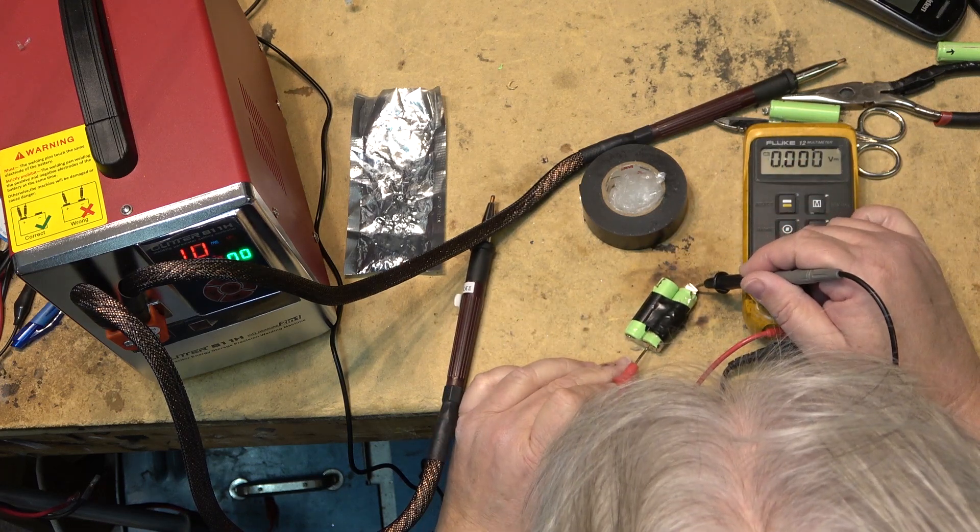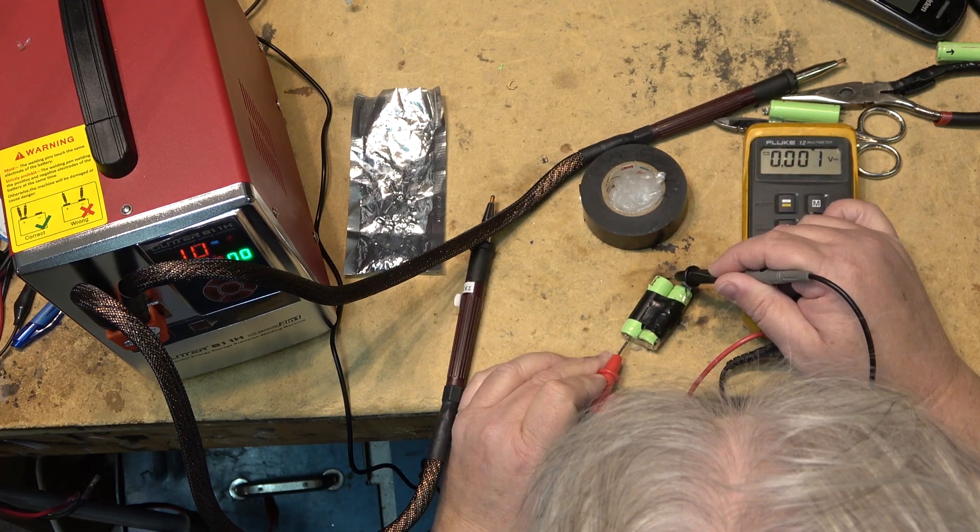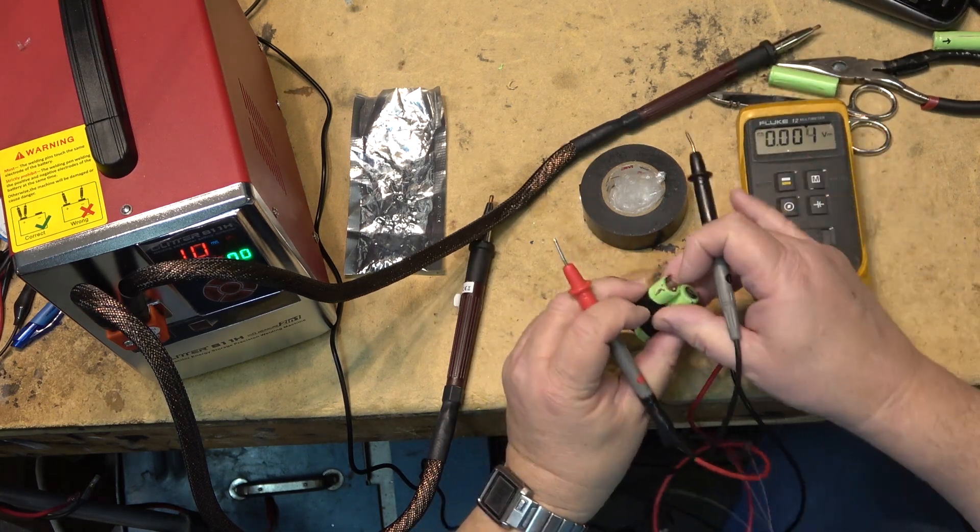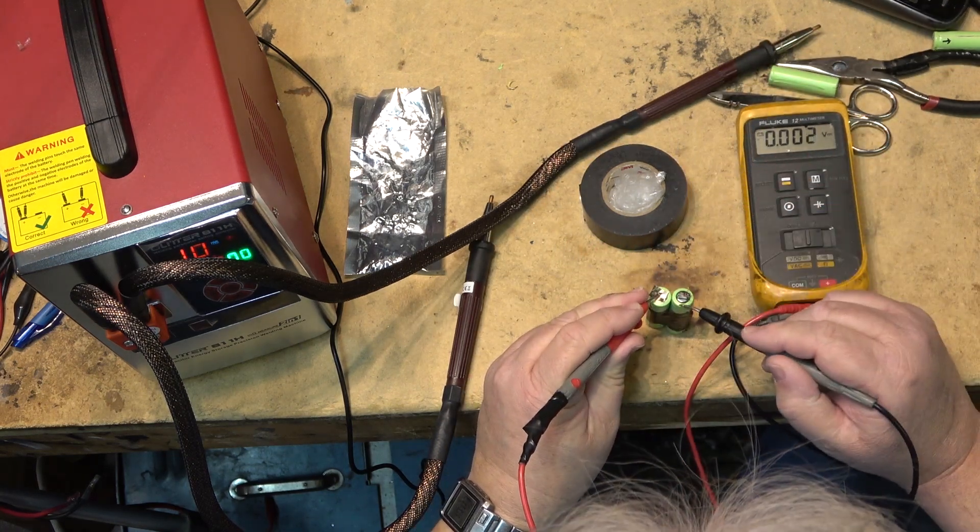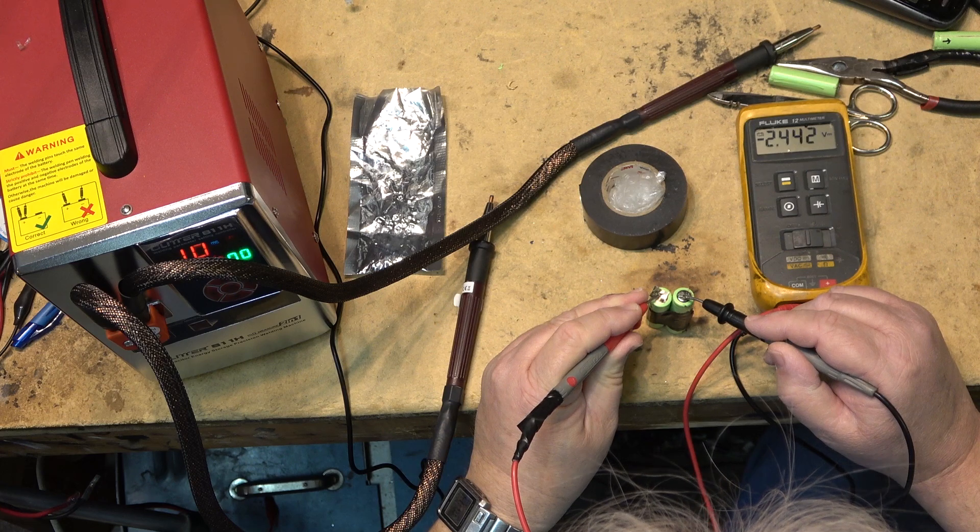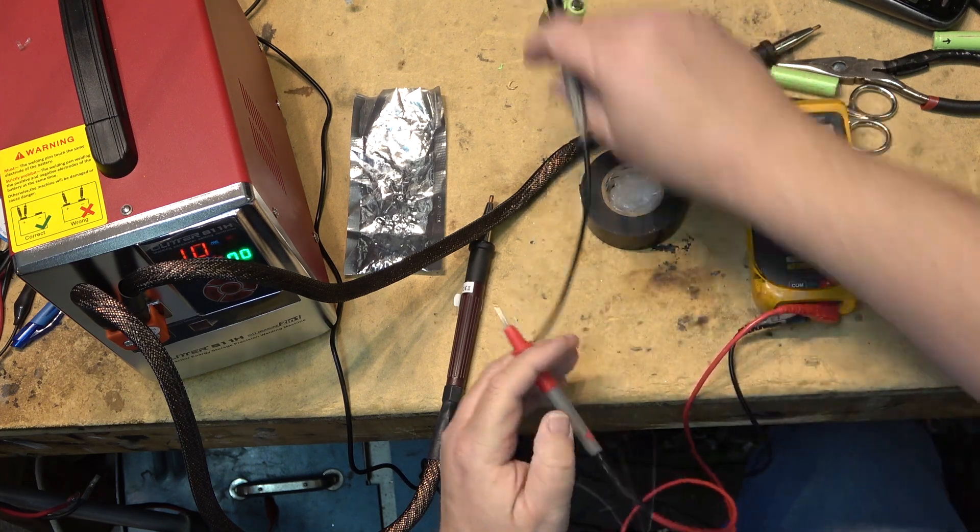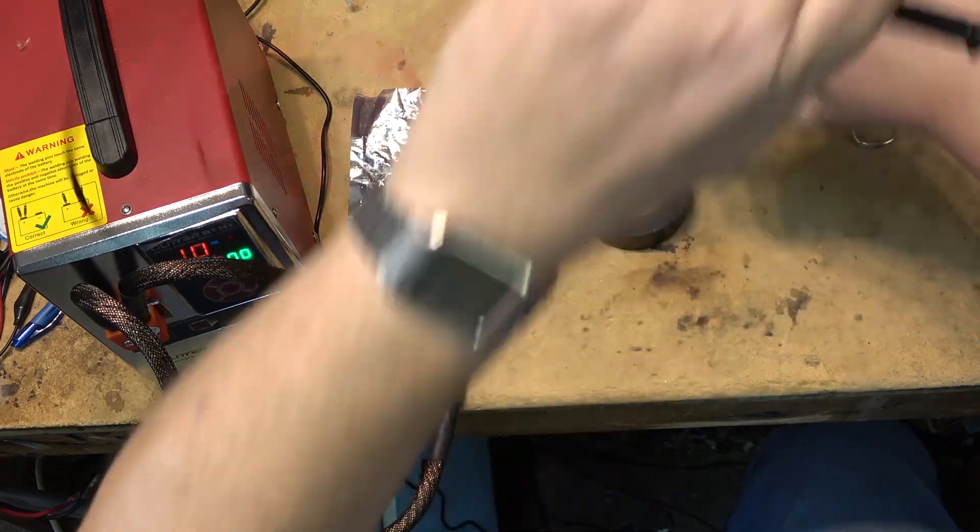I have a bad connection somewhere because I have no volts on one. Oh, might help if the probe is plugged into the meter. Here we go. To say the cells are not fully charged but they have 2.4 volts. Yeah, one of my probes came out. So that's one pack done.